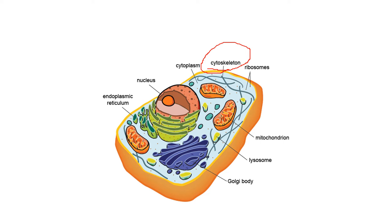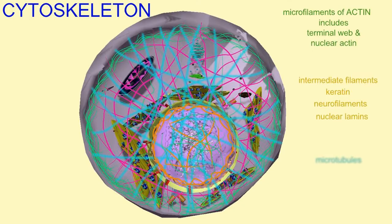The cytoskeleton is a network of protein fibers present throughout the cytoplasm of the cell. In this image, you can see a cell with the nucleus at the center and various organelles inside — like the purple structure, which is a mitochondria — and various other organelles within the cell. You also see some thread-like fibers running throughout the cell. These structures are the cytoskeleton of the cell.